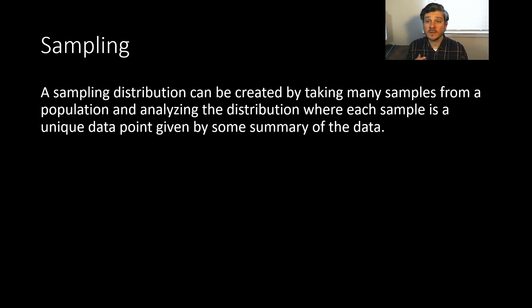So first of all, what is a sampling distribution? Well, it's first of all a distribution, but it's a distribution created from taking many samples from our population and then analyzing what that distribution looks like, where each one of those samples is just one unique data point given by some summary of the data. And we'll give an example, so hopefully that's clear.